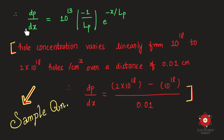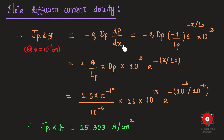Reverting to the main problem, we substitute the estimated dp/dx into the hole diffusion current density equation. We have the electronic charge q, Dp = 26 cm²/s, and Lp = 10⁻⁶ cm. At x = 10⁻⁶ cm, x/Lp = 1, so the expression becomes exp(-1).